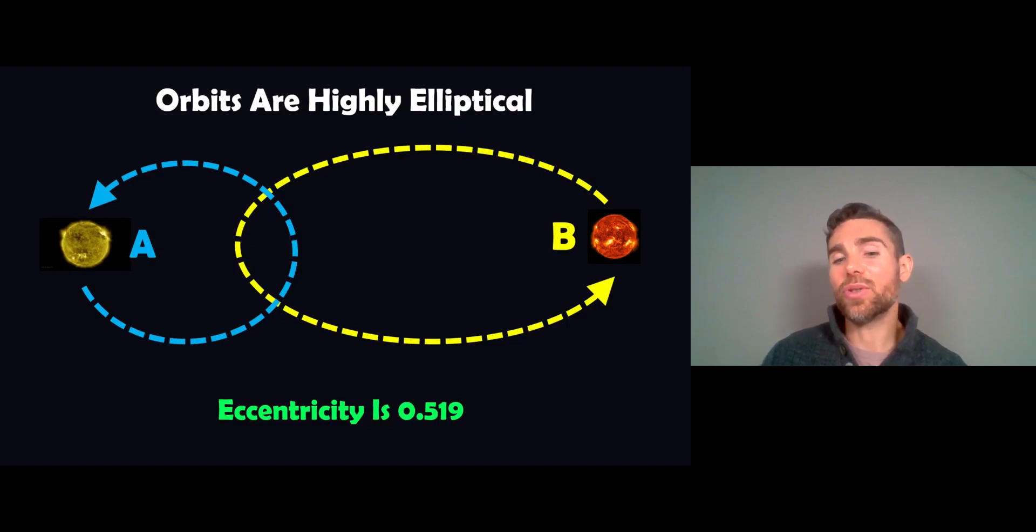So the interesting thing about these two stars is that they have quite a high, well, very highly elliptical orbits. So it means that they are, well, their orbits are elliptical, like displayed here, but it means that they get closer and further away during their orbits. So their separation between the two stars will change during their orbital period. They have a very high eccentricity, which gives us the elliptical orbits that they have.